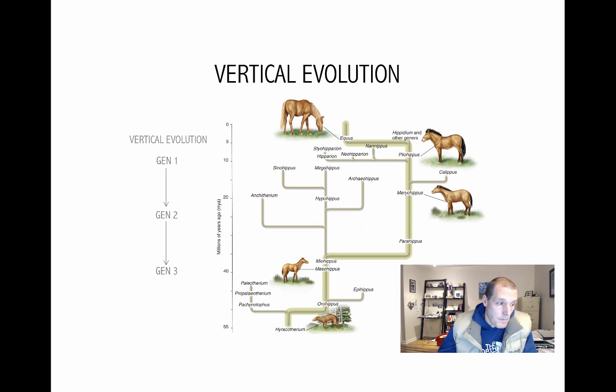And so if we look at the example here of vertical evolution in horses, down here at the bottom, Hyracotherium, this is the ancestral horse, and this was some 54, 55 million years ago. And over time, there were genetic changes in that species, until at some point, two new species were formed. And those two species are extinct, Orohippus, and then this lineage over to the left.